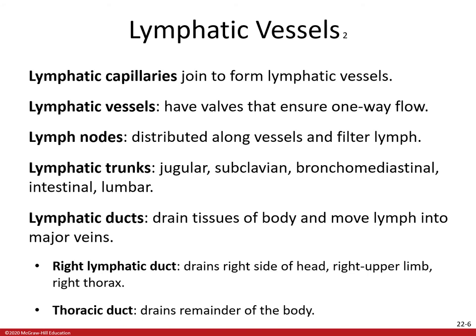Moving on to more lymphatic vessels: our lymphatic capillaries eventually join to form larger lymphatic vessels, which have valves that ensure one-way flow. Lymph nodes are distributed along vessels and filter lymph — that's a big important function. We have lymphatic trunks associated with the jugular, subclavian, bronchomediastinal, intestinal, and lumbar. Lymphatic trunks drain into those vessels or into the next lymphatic vessel: the lymphatic ducts. Those ducts drain the tissues of the body and move lymph into major veins.